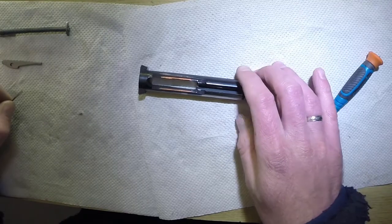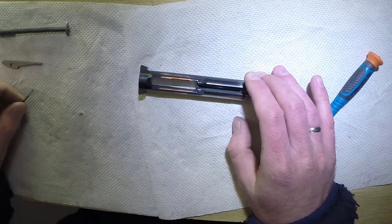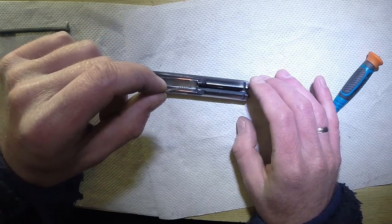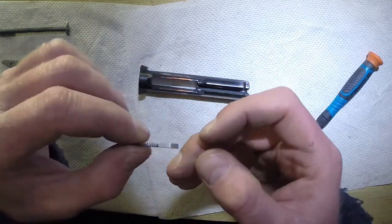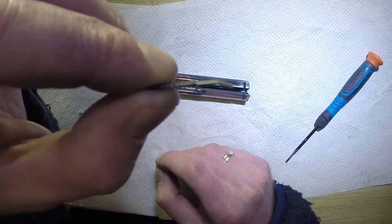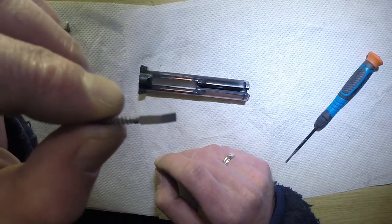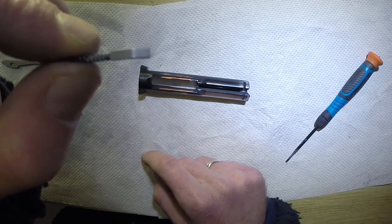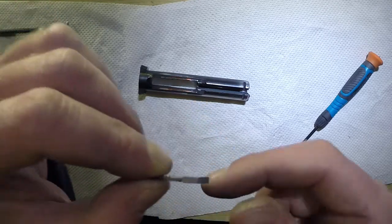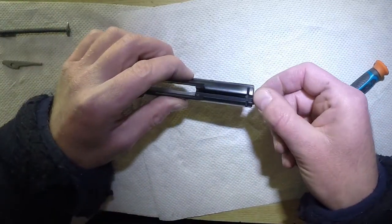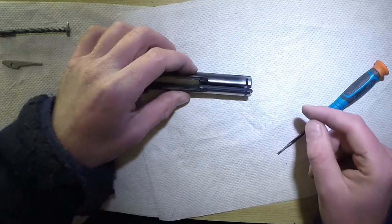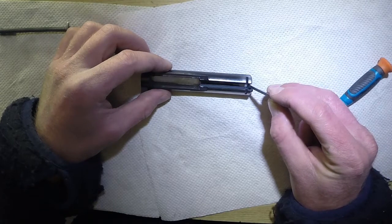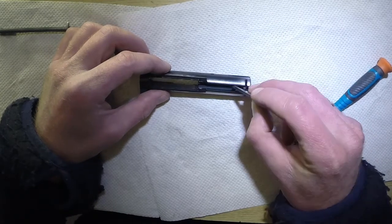Now we're going to put the rebound spring support and the rebound spring in. I replaced the rebound spring with a wolf rebound spring which is extra power. Notice it has a curved end, so it's going to go in this way with the angle up. Once you've gotten it in, I usually use the firing pin to push back on it to get it all the way back in, into its slot.